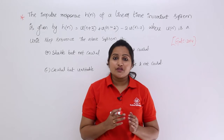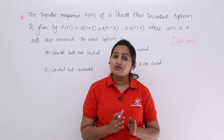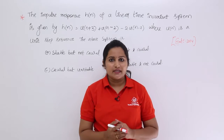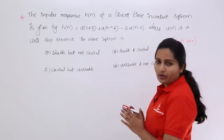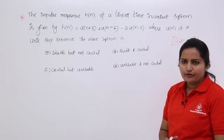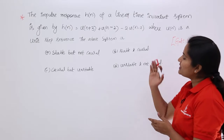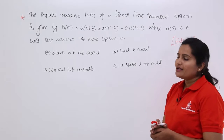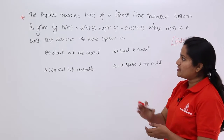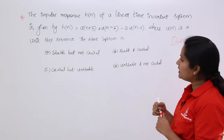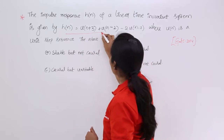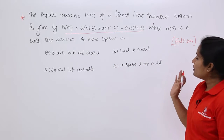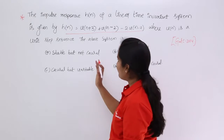In this video we are going to discuss stability and causality and a problem related to them. This problem is from GATE 2004. The impulse response h(n) of a linear time-invariant system is given by h(n) = u(n+3) + u(n-2) - 2u(n-7), where u(n) is the unit step sequence.